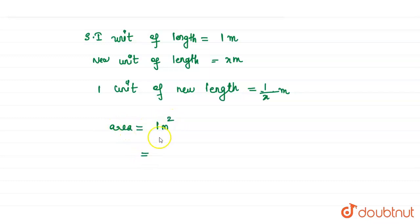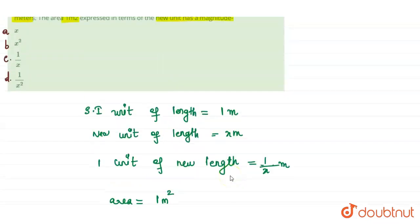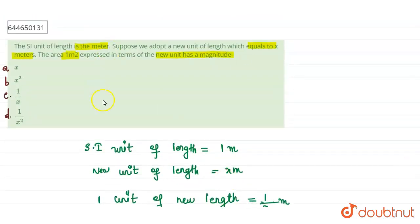So, what is it in the new system? It is 1 by x into 1 by x, so that is 1 by x square. This is the unit of area in the new unit. So, our answer matches with option D, that is 1 by x square.